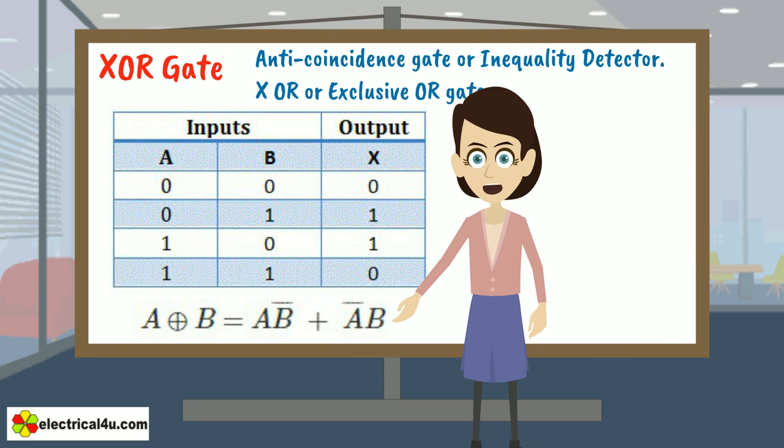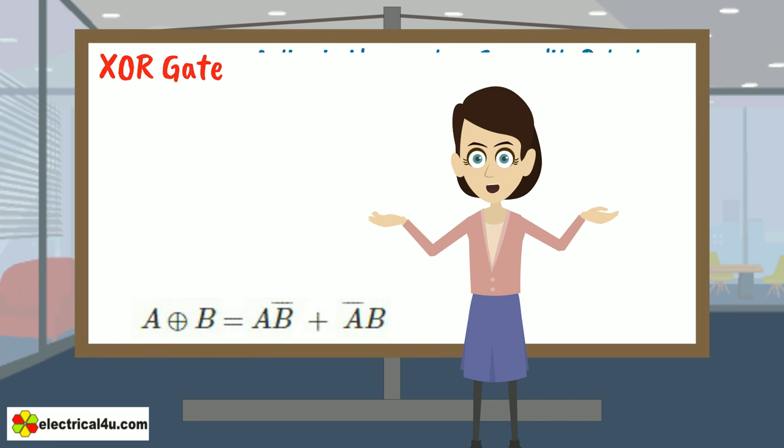it can easily be seen that the sum of products or SOP form of A and B is A circled plus B equals AB bar plus A bar B. From this boolean expression,